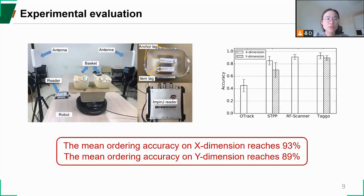We implement a prototype of our system. One commercial RFID reader and two antennas are employed to collect the phase information of tags. A mobile robot is used to simulate a conveyor belt.